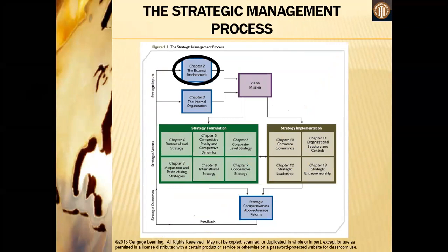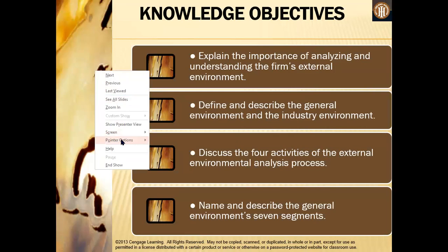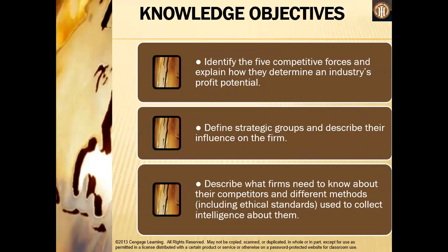Now we are on the external environment. Our learning objectives for this session: number one, explain the importance of analyzing and understanding the firm's external environment; define and describe the general environment and the industry environment; discuss the four activities of the external environment analysis process; name and describe the general environment and its seven segments; identify the five competitive forces and explain how they determine the industry's profit potential; define strategic groups and describe their influence on the firm; and describe the firm's need to know about competitors and the methods used to collect intelligence about them.